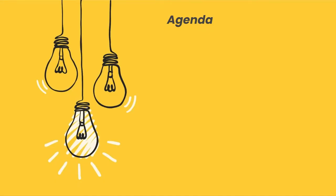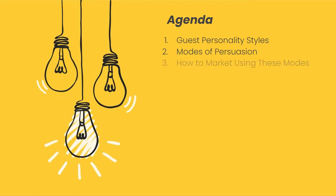With our objective in mind, let's look ahead at what we'll cover today. First, we'll explore the different personality types you might encounter. Then we'll go over the classic modes of persuasion and how you can appeal to different people. Then we'll bring everything together with specific examples of how to market using these concepts. And finally, we'll have some time at the end for a Q&A. With that in mind, let's get started.